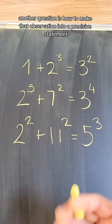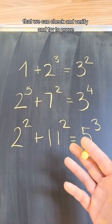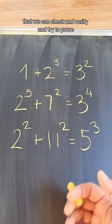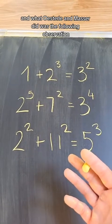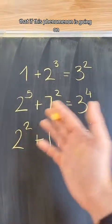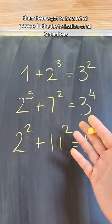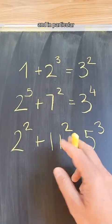Another question is how to make that observation into a precise statement that we can check and verify and try to prove. And what Osterle and Masser did was the following observation, that if this phenomenon is going on, then there's going to be a lot of powers in the factorization of all three numbers.